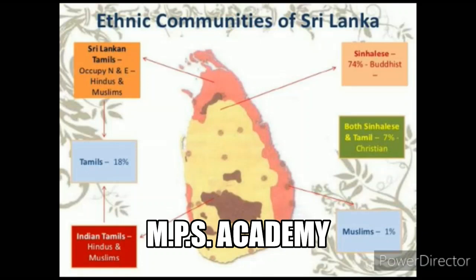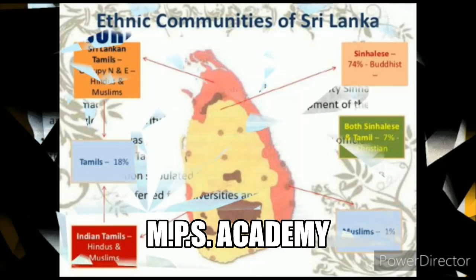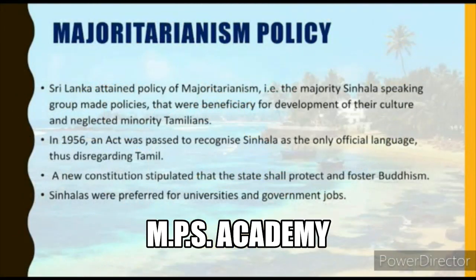What happened in Sri Lanka? Sri Lanka, with 74% Sinhalese speakers, adopted a policy of majoritarianism. This meant the majority Sinhalese-speaking group made policies that were beneficial for the development of their culture and language, while neglecting the minority Tamils. In 1956, an act was passed to recognize Sinhalese as the only official language, thus disregarding Tamil.